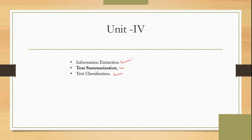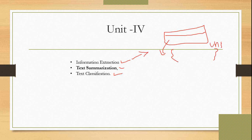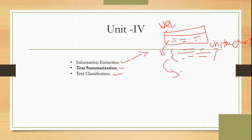In text information extraction, you have to extract the information from a website or any resource and keep it in an unstructured format. Once you extract all the information online from a particular URL and store it in unstructured format, you then apply the summarization.